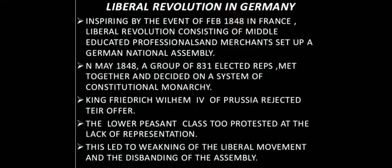In the liberal revolution in Germany, European people were inspired by the events of February 1848 in France. A large number of political associations consisting of middle class educated professionals, merchants and prosperous artisans came together in the city of Frankfurt and decided to set up a German National Assembly. On May 1848, a group of 831 elected representatives marched in a festive procession and met together in the Frankfurt Parliament, deciding on a system of constitutional monarchy.